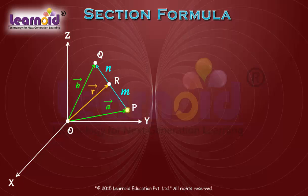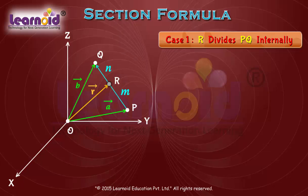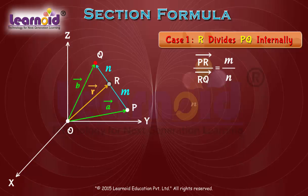Let us first discuss the internal division case. R divides PQ internally in the ratio m is to n. So, we can write it as fraction PR by RQ is equal to m by n, or n PR vector is equal to m RQ vector.